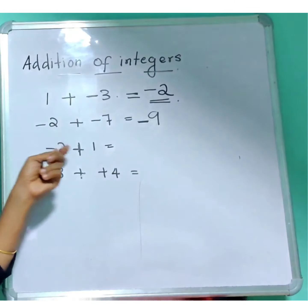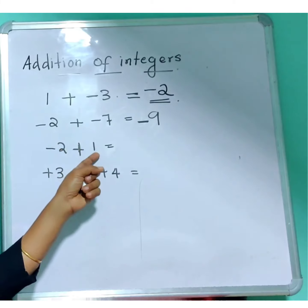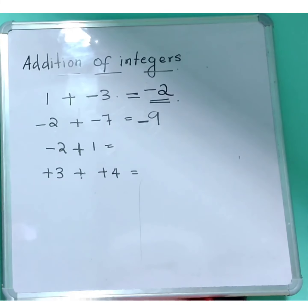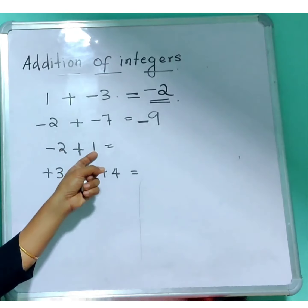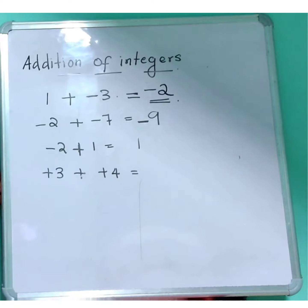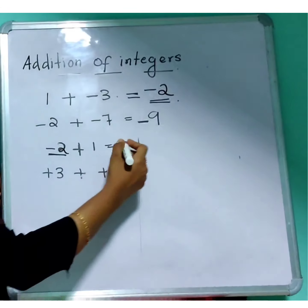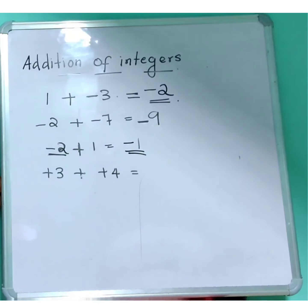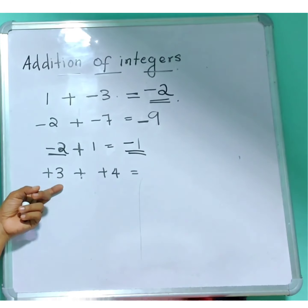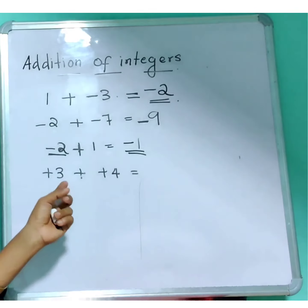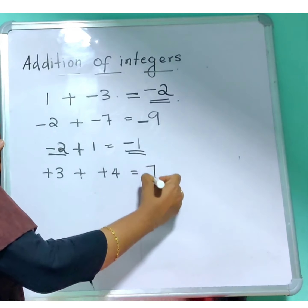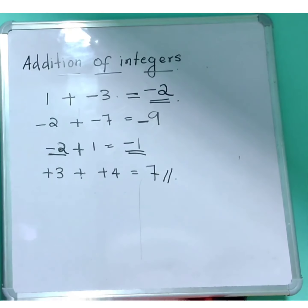Next question: minus 2 plus 1. Adding a negative and a positive integer — subtract: 2 minus 1 equals 1. The larger number is 2 with a minus sign, so the answer is minus 1. And finally, 3 plus 4 — this is simple: 3 plus 4 equals 7. This is how you do addition of integers. I hope you understood how we can add integers.